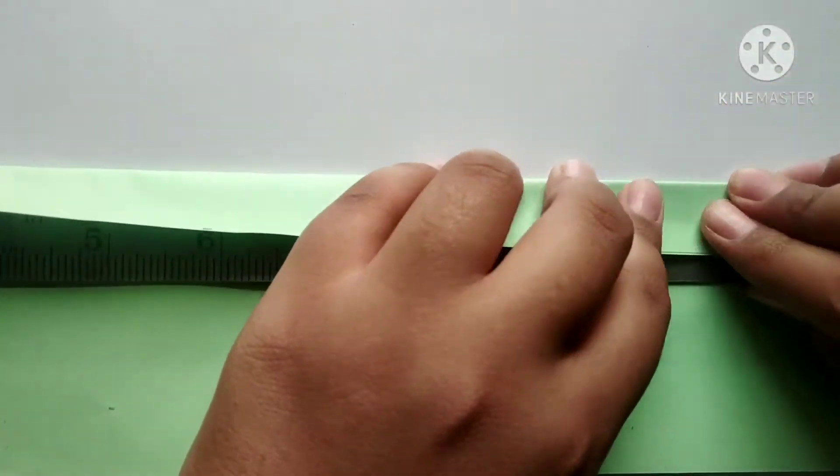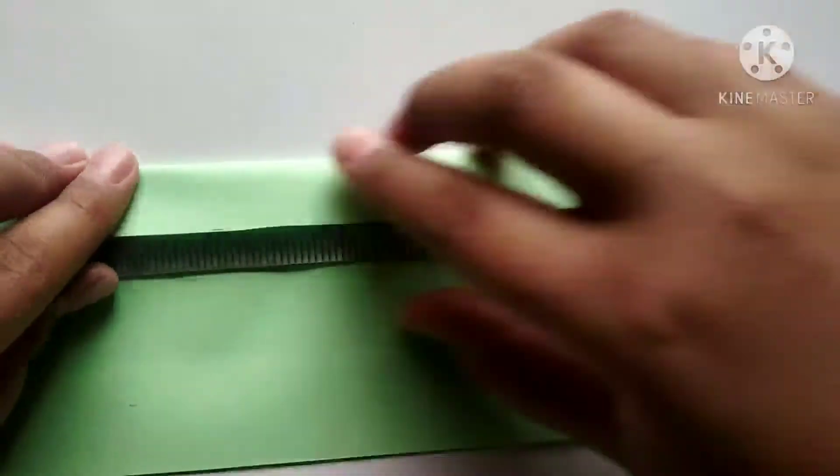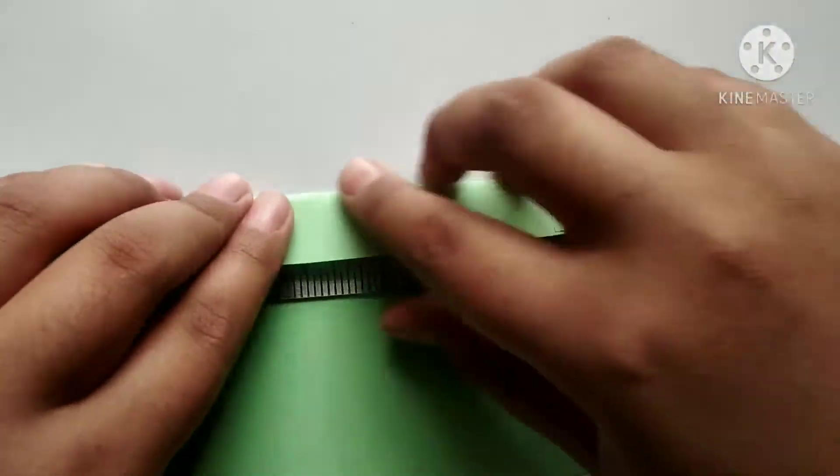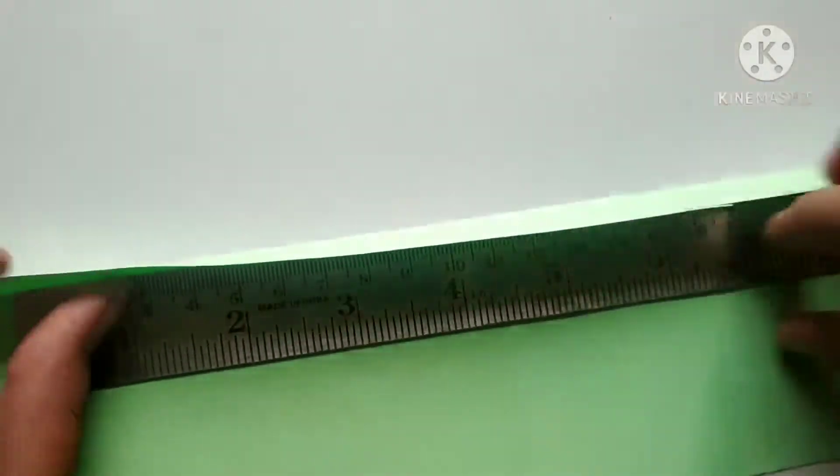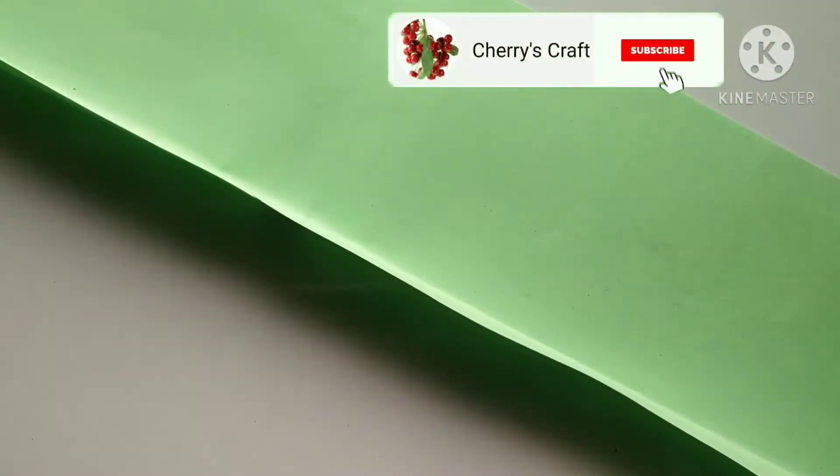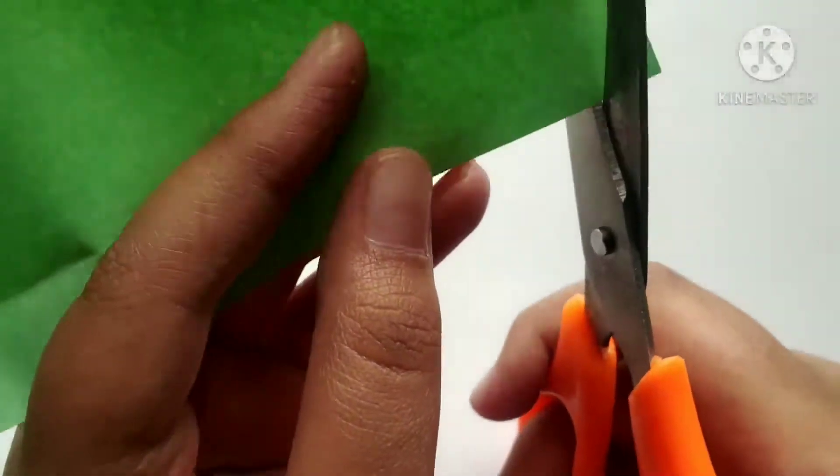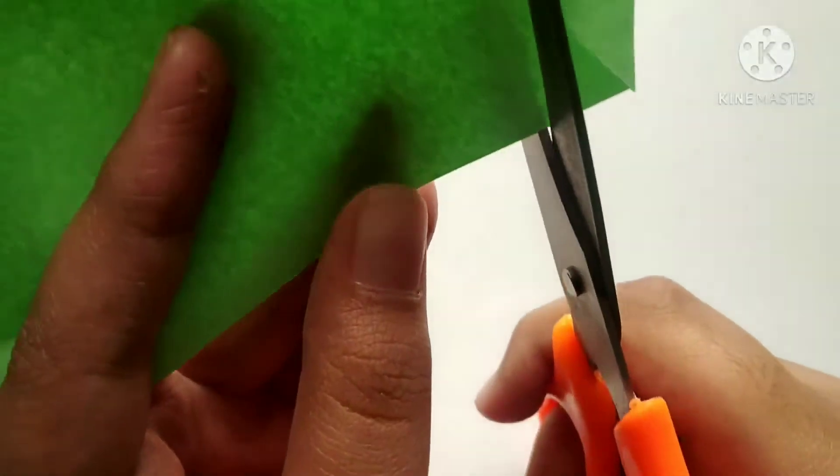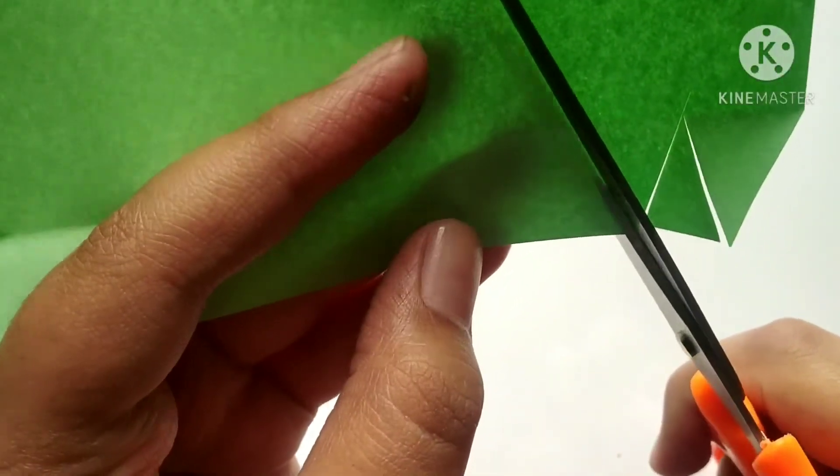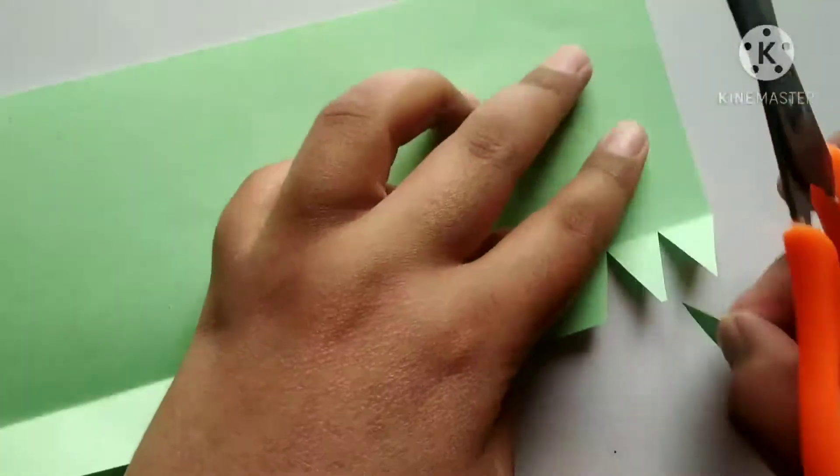Strictly fold on both sides. Now we need to take scissors and we need to cut this exactly. We need to cut this same way up to the last.